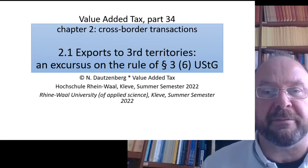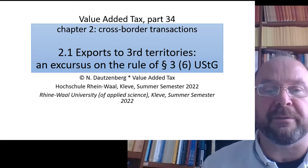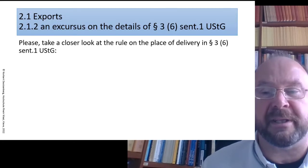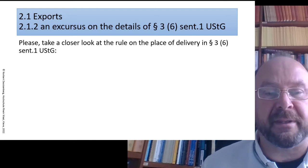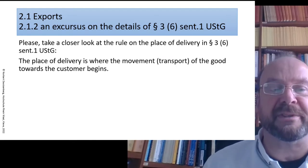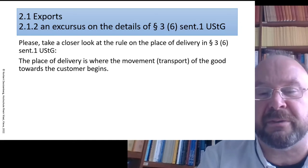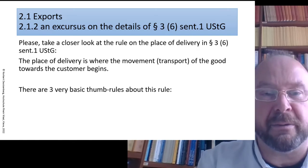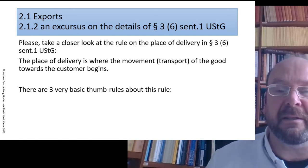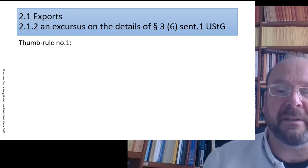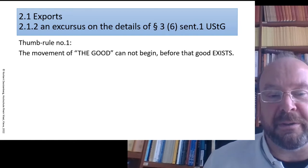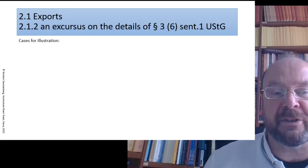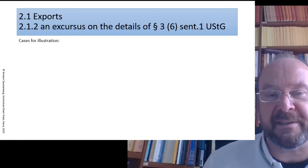The place of delivery of a good is where the movement of that good towards the customer begins. A closer look shows: the place of delivery is where the movement or transport of the good towards the customer begins, and three important thumb rules are never to be forgotten. Number one: the movement of the good cannot begin before that good exists. This is sheer logic, but it often has surprising implications.